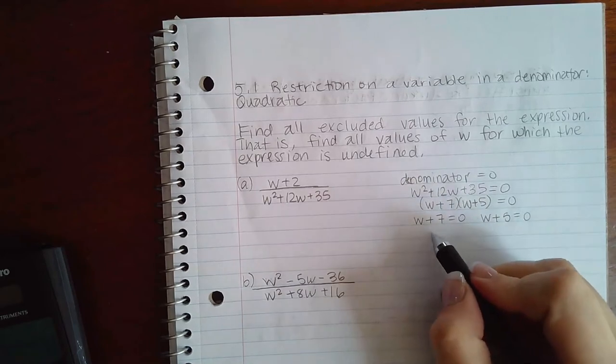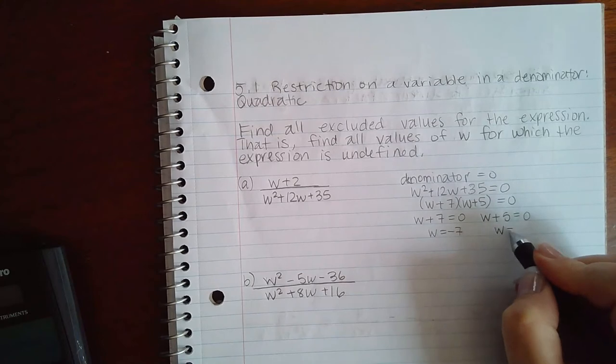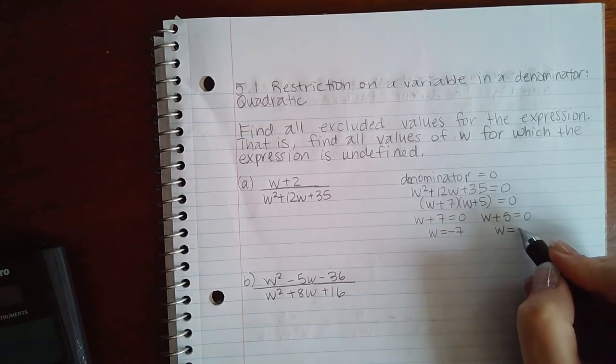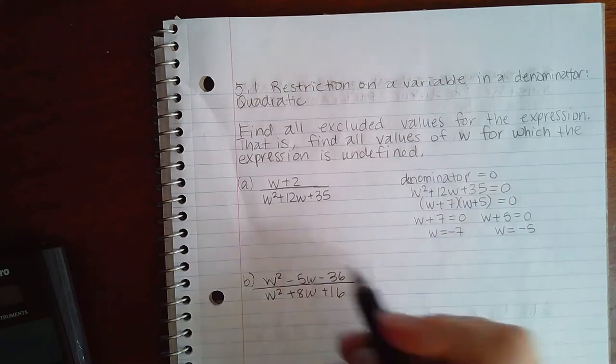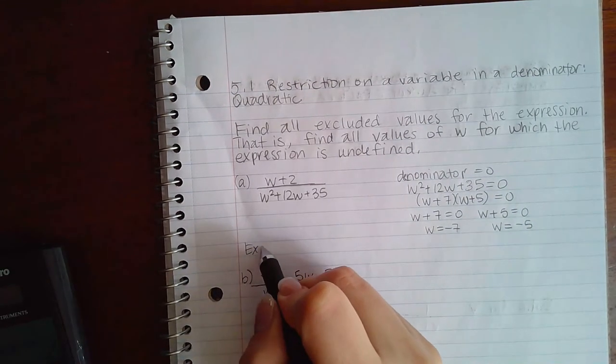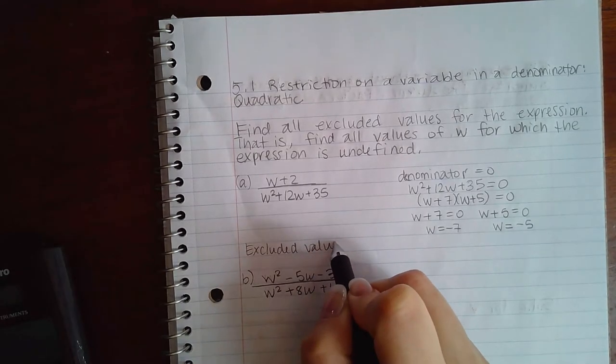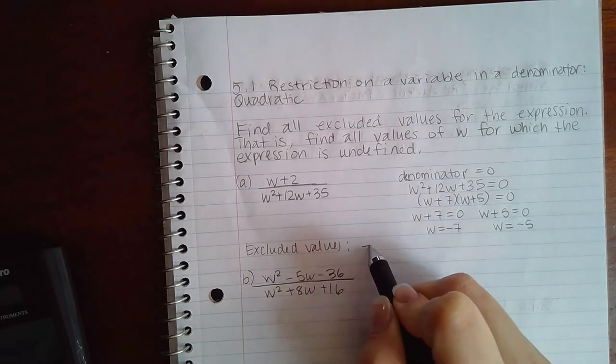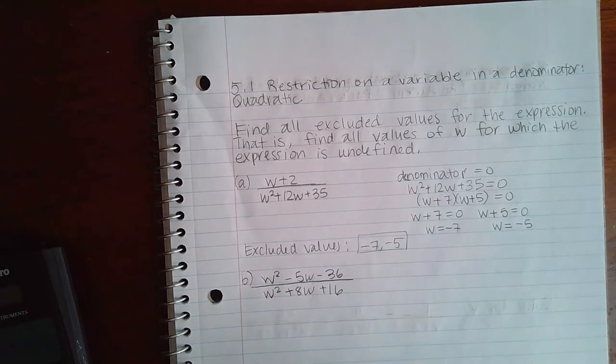And what value of W would make this factor zero? Negative 7. What value of W would make this factor zero? Negative 5. So then what are my excluded values? My excluded values are negative 7 and negative 5.